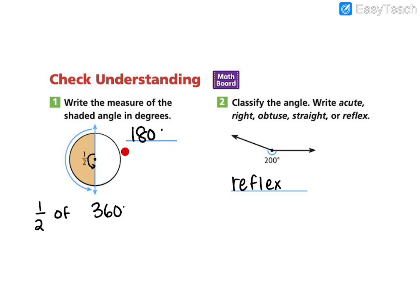All right, you should have found that it was equal to 180 degrees. 180 is half of 360. And then this angle was a reflex angle. Because 200 is greater than 180 degrees. So it is a reflex angle.